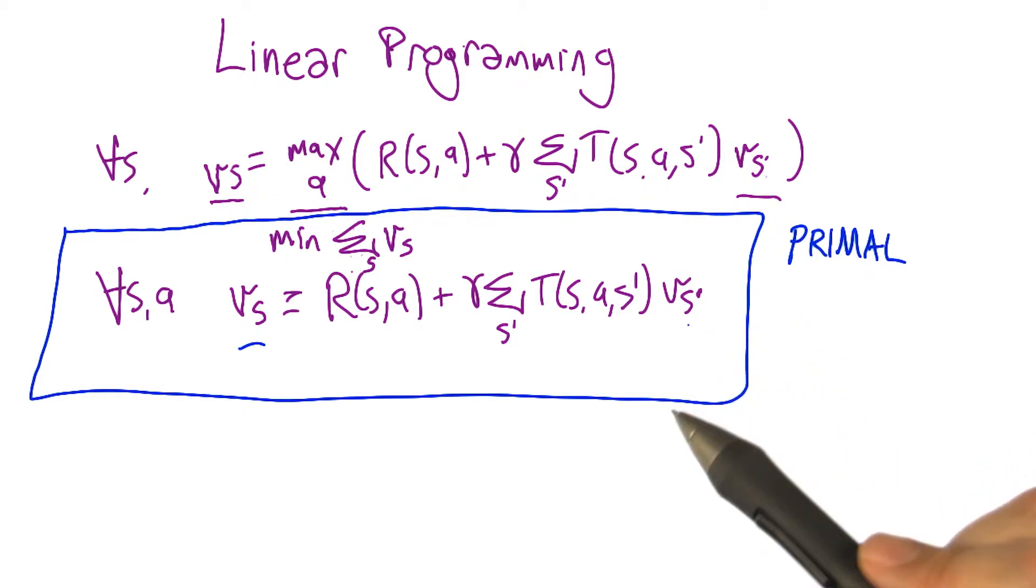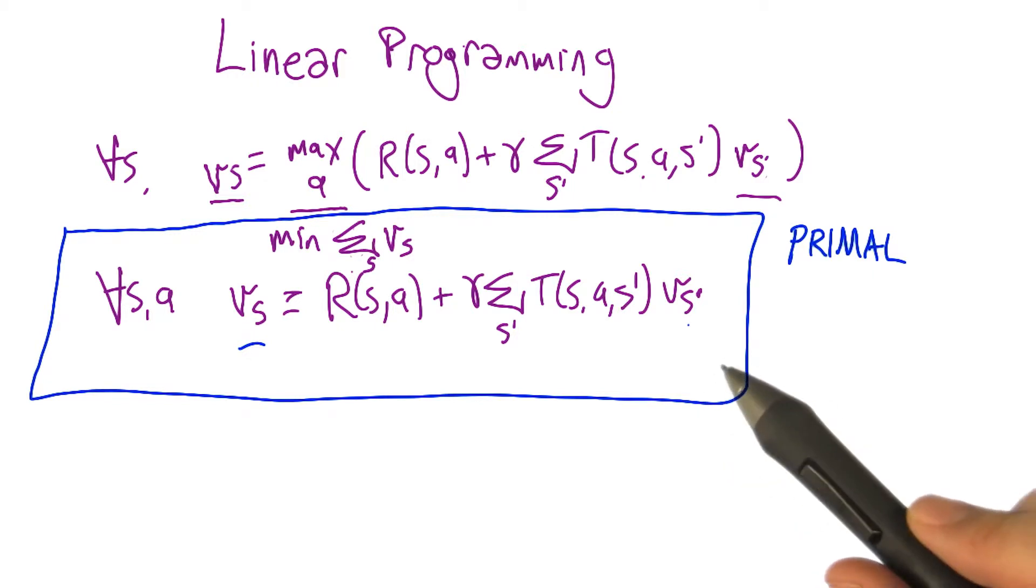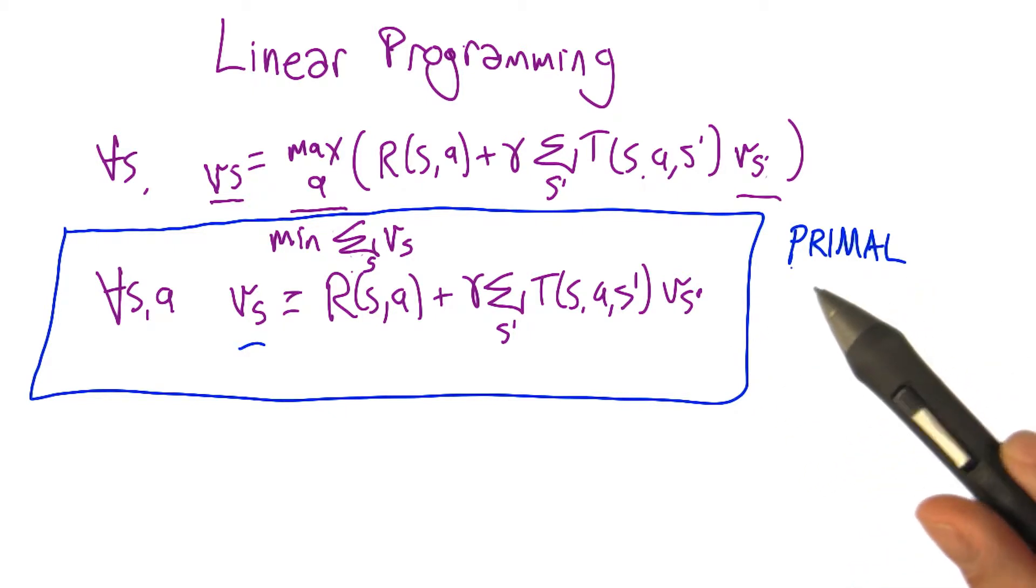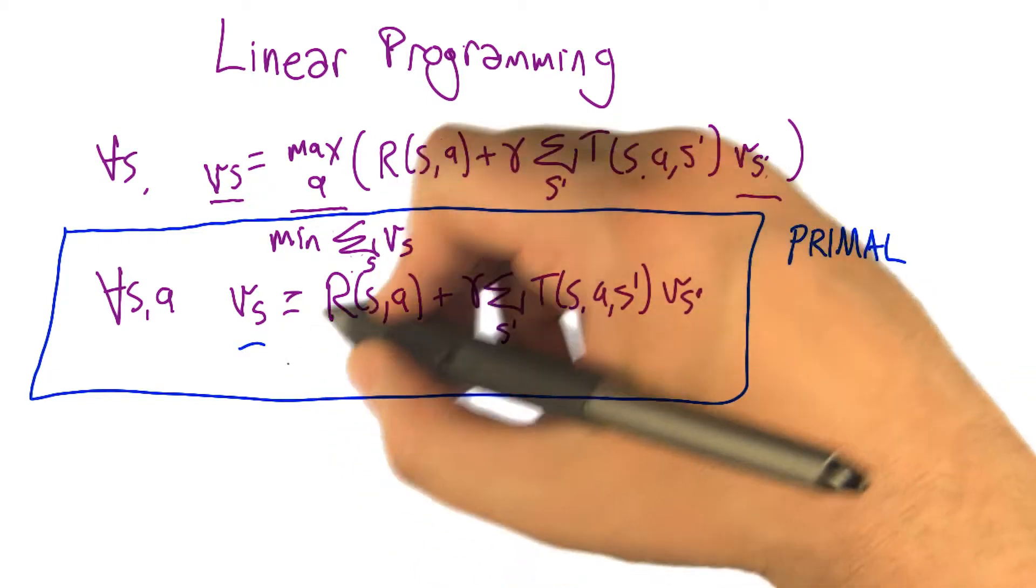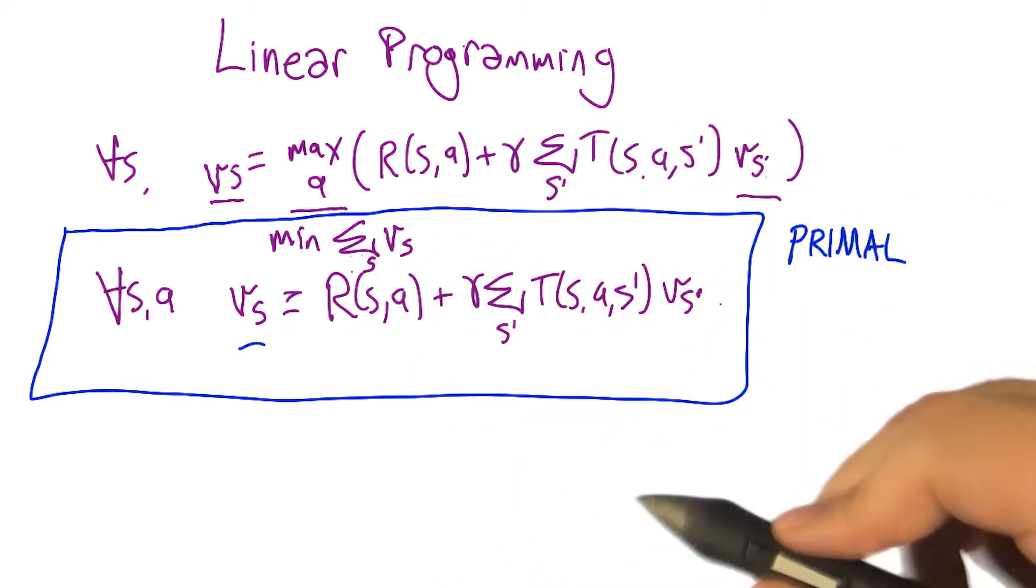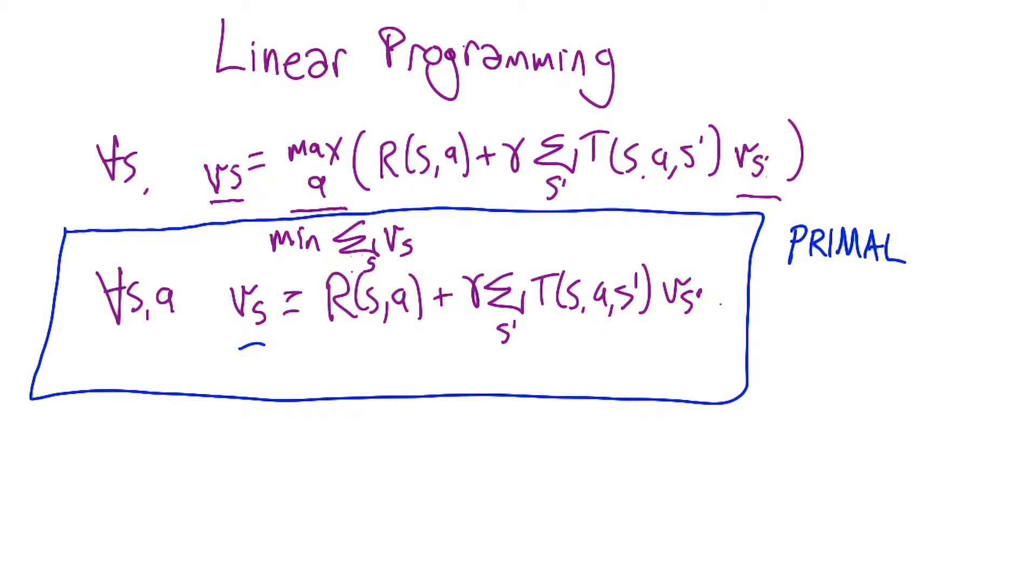I haven't seen too many people really use linear programming to solve MDPs. It's got some overhead associated with it that seems to make it a little bit difficult to get it to run competitively with the other algorithms. But it's okay, especially if you have a really good linear programming package. And if you happen to have other kinds of linear constraints that you need to throw in, this is a very convenient way of solving slightly more difficult problems. MDPs plus a little bit of extra constraint.